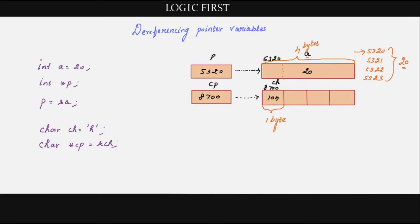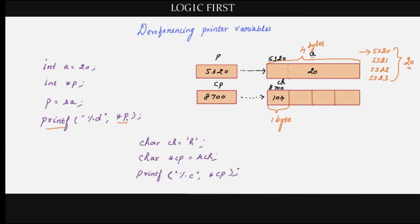In a printf, if you print star p: 'p' has the address 5320, it goes to that address and fetches the value 20, so 20 will be printed. Similarly, in this printf for star cp: 'cp' has the address 8700, it goes to that address and fetches the value from there. The stored value is 104 (the ASCII value for small 'h'), but since we use the %c format specifier it will be converted and printed as 'h'.